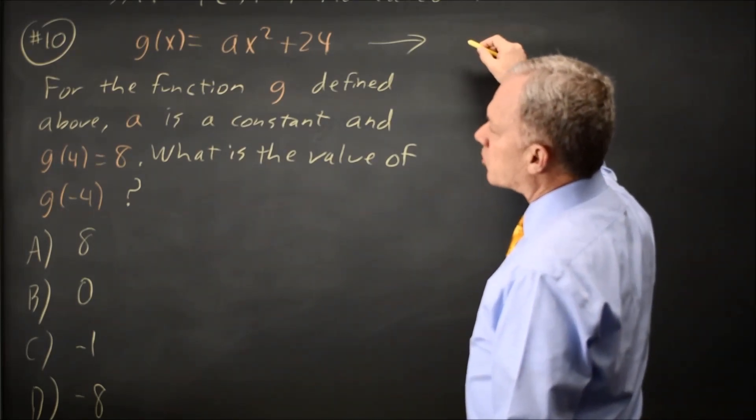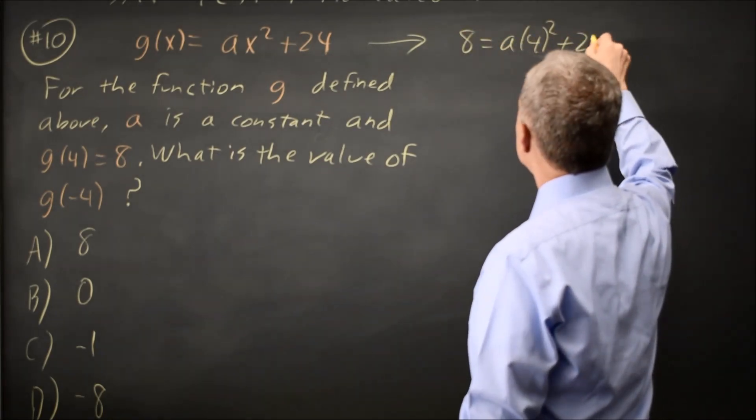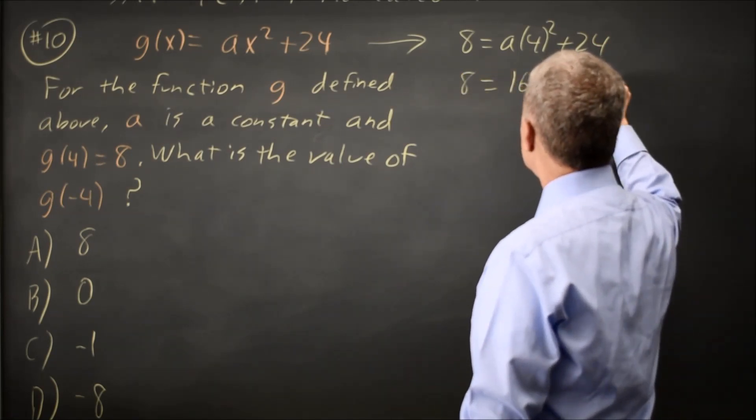When x is 4, g of x is 8, so 8 equals a times 4 squared plus 24, so 8 equals 16a plus 24.